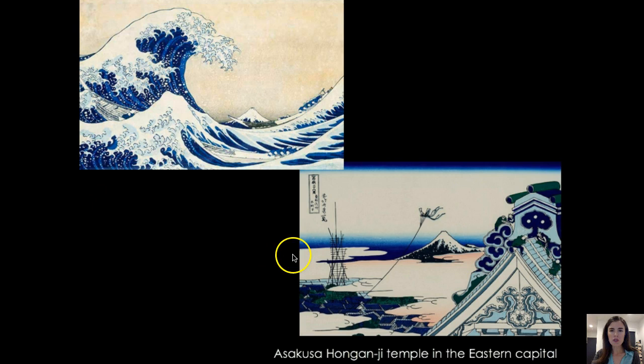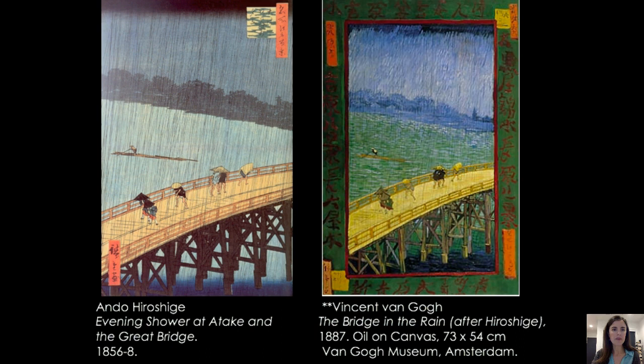There are 36 views in this series. Another view shows a scene from a temple with an ornate roof, clouds framing Mount Fuji, and a kite. Landscape scenes were quite common subjects for Ukiyo-e.